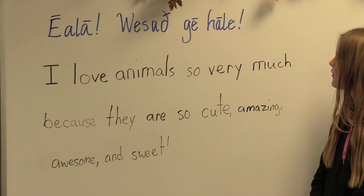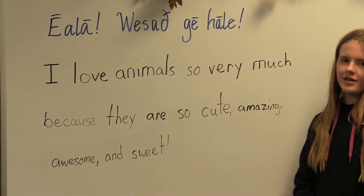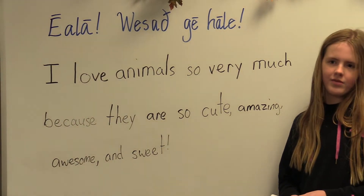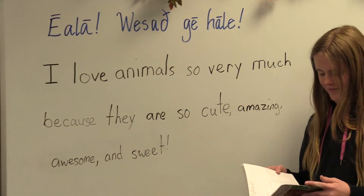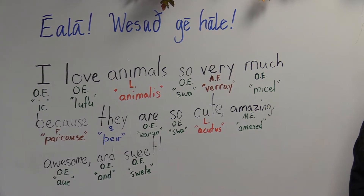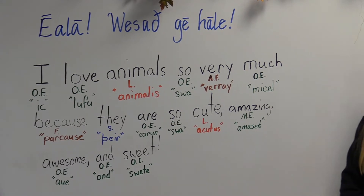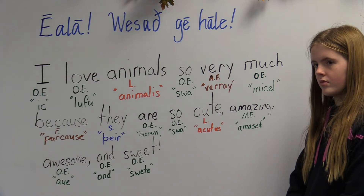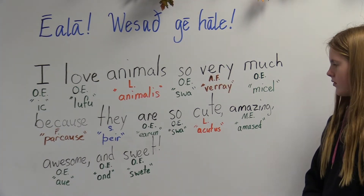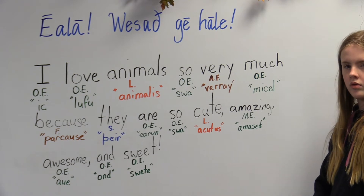Another sentence was: 'I love animals so very much because they are so cute, amazing, awesome and sweet.' Does anybody know what 'I' comes from? Old English. What do you notice or wonder about this? Addison had a question — a little off topic — but: can exclamation points and question marks, like where did all those things come from? That is a really, really cool question.